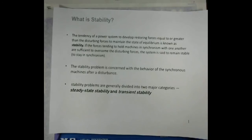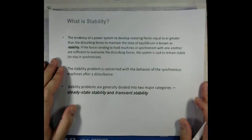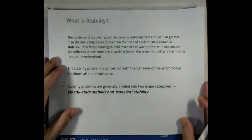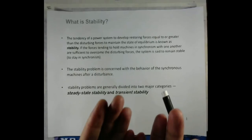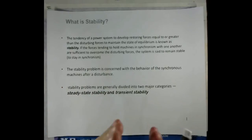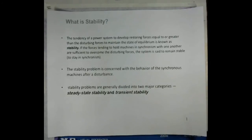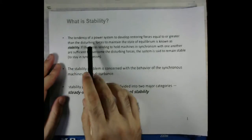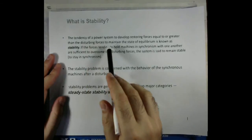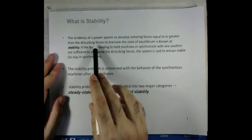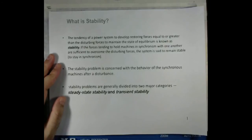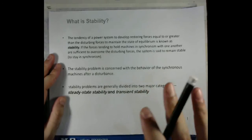Stability in general refers to the tendency of a power system to develop restoring forces equal to or greater than the disturbing forces. A power system could be subjected to disturbances — a fault is a type of disturbance, occurring when system parameters are no longer within allowable limits. Stability relates to the tendency to maintain the state of equilibrium: restoring forces must be equal to or greater than disturbing forces.